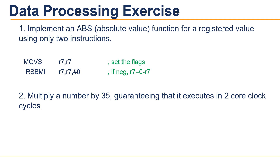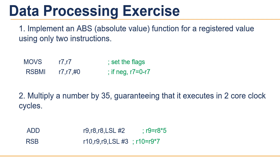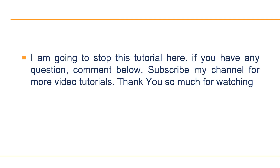For the next question: multiply a number by 35, guaranteeing it executes in two clock cycles. The solution is: in the first instruction the number is multiplied by 5, and in the second it is multiplied by 7, so the overall result is a multiplication by 35. I am going to stop this tutorial here — if you have any questions please comment below and subscribe to this channel for more video tutorials.